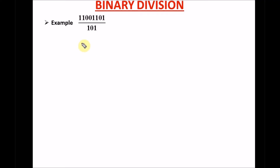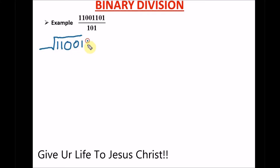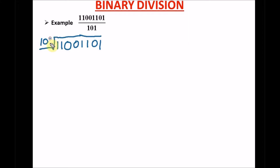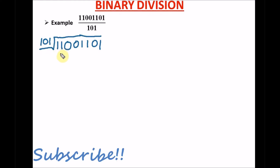Just like in your arithmetic class, when you want to divide, you write it down the same way. So we write 101 here, and we have 0 1 1 — you draw it this way. First of all, can 101 go into 1? No. Can it go into 1 1? No. Can it go into 1 1 0? Yes, it can go.